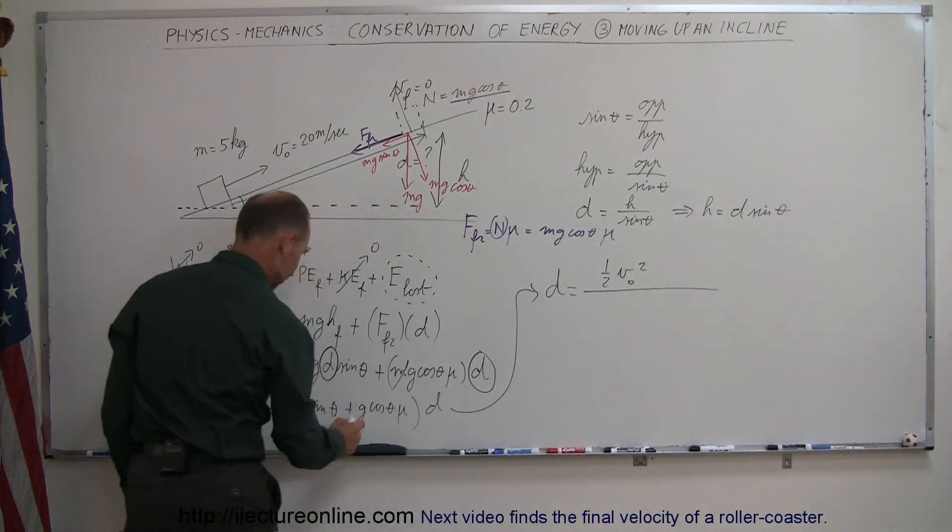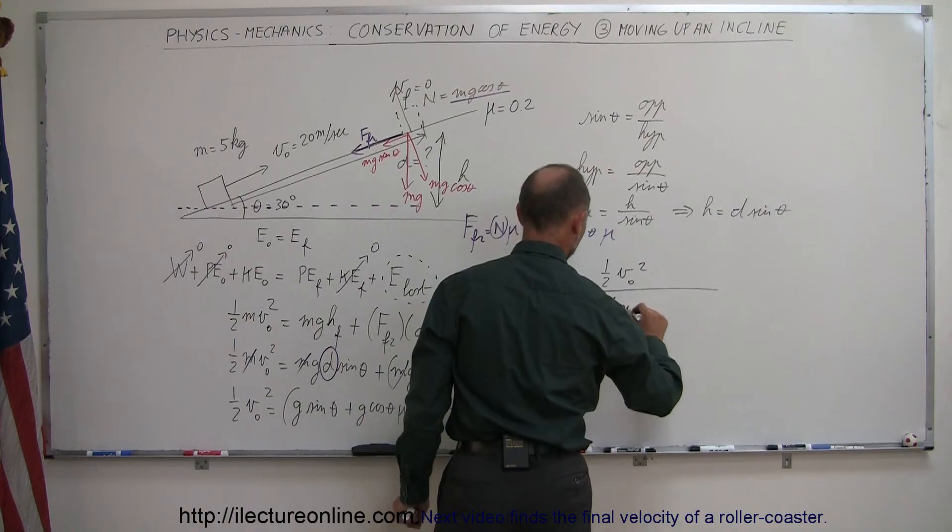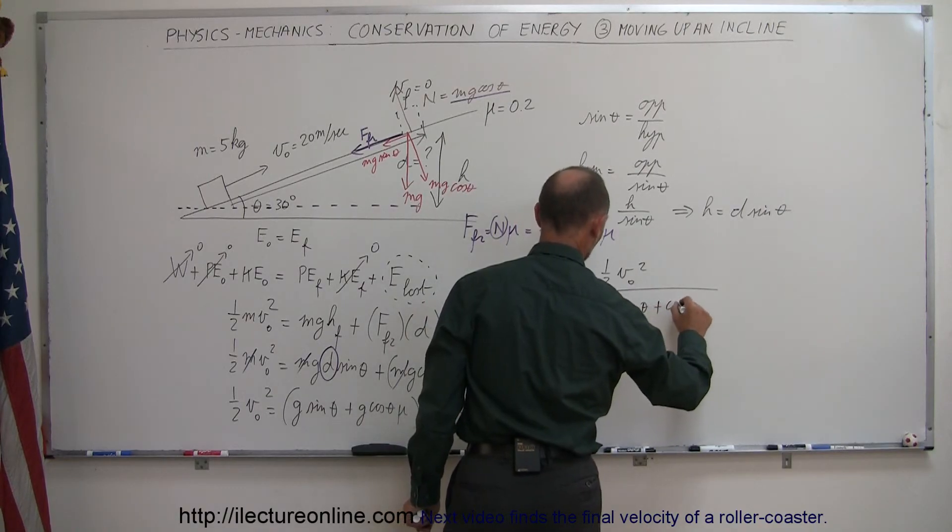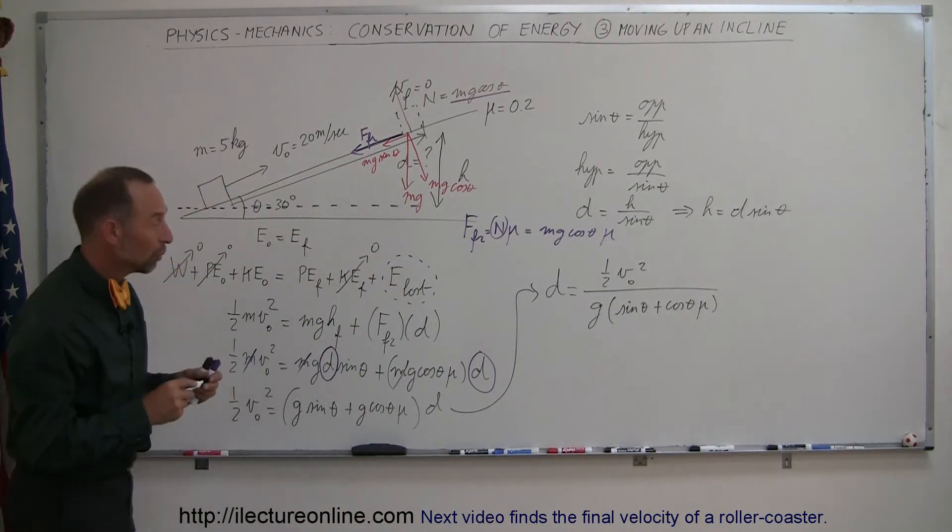And of course notice I can factor out a G, so divided by G times the sine of theta plus the cosine of theta times mu. And that will tell me how far the object will move along the incline before coming to a complete stop.